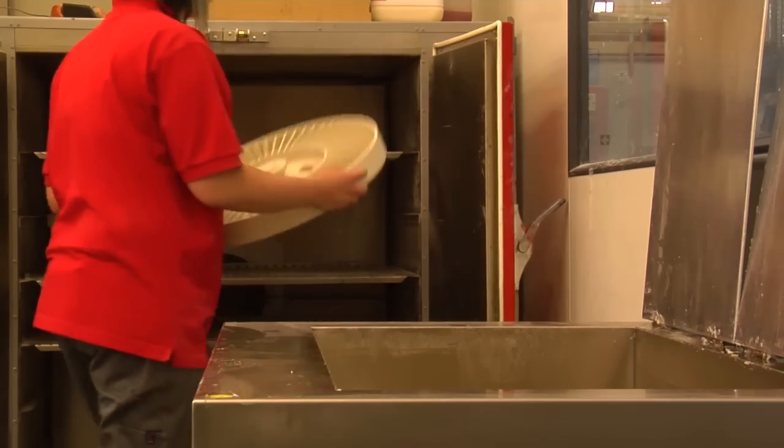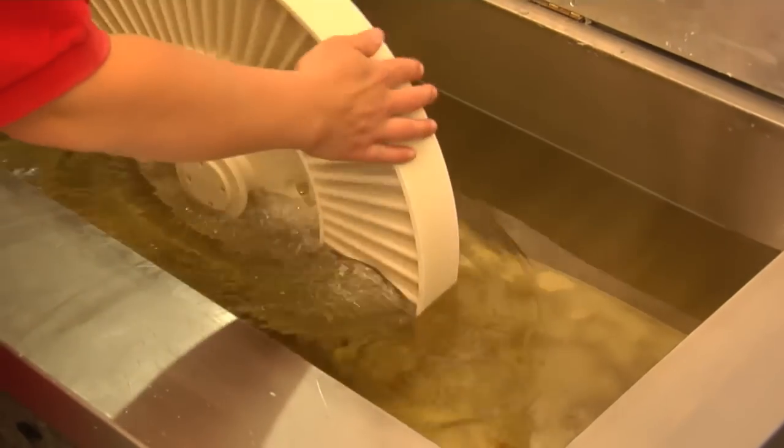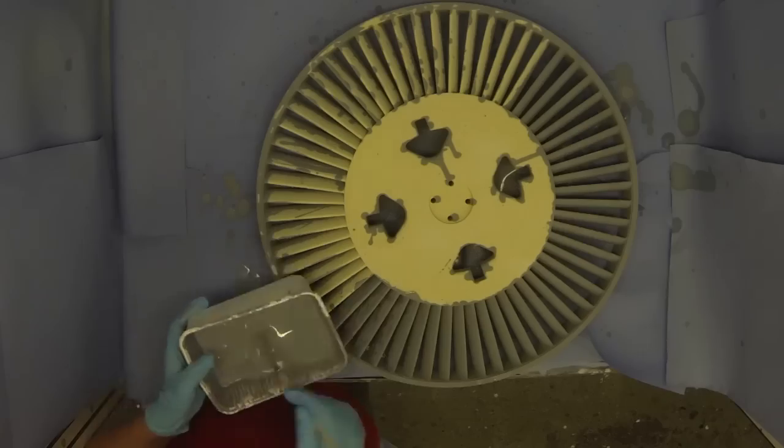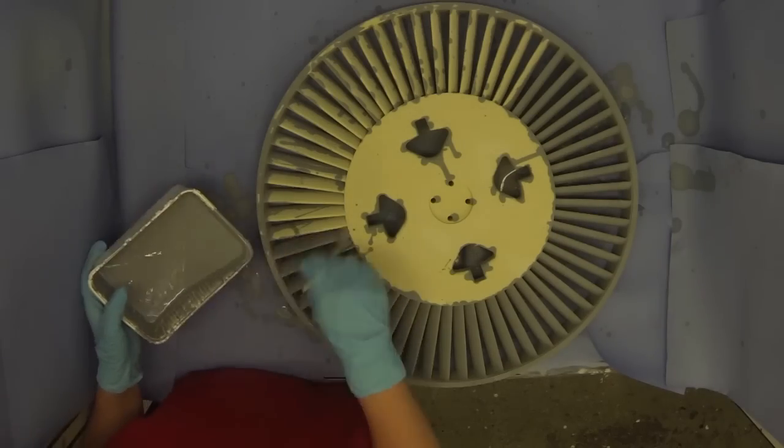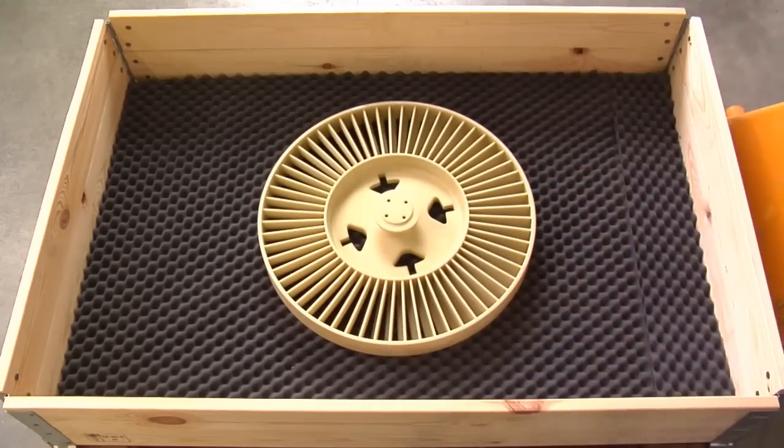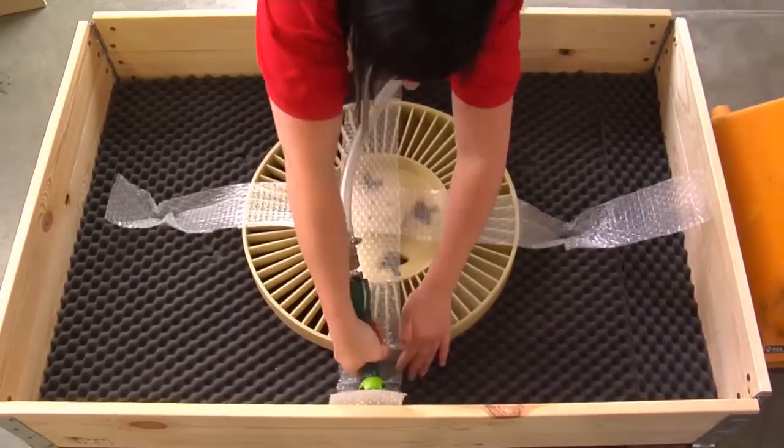For investment casting, the models are briefly immersed in wax to seal and smooth the surface. Design models are infiltrated with epoxy resin for added strength. The models are packaged carefully to ensure safe delivery to the customer.